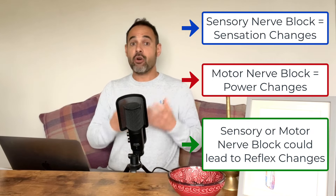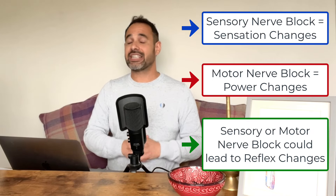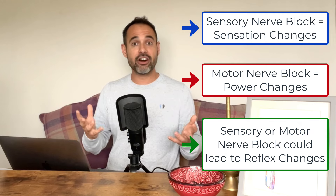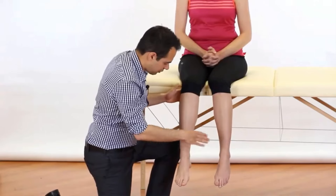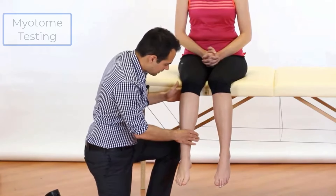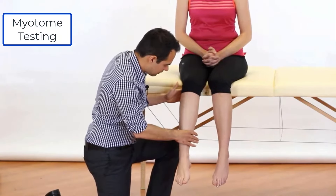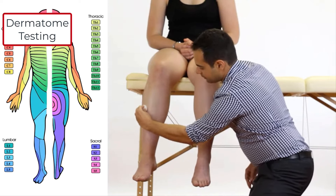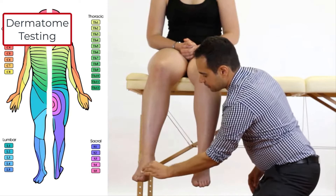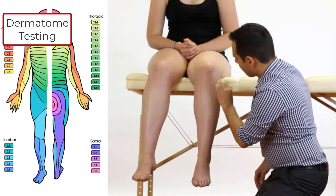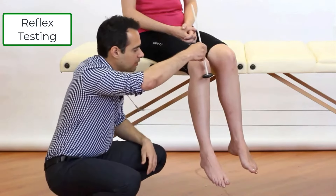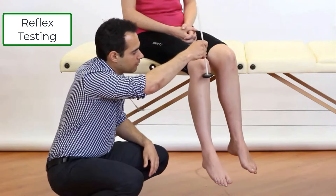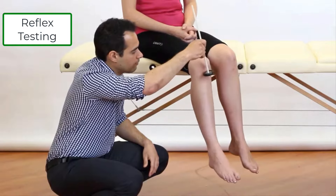As a result, these three key symptoms — dermatomal changes in the form of numbness or pins and needles, myotomal changes in the form of motor weakness, and reflex changes — are a key concept in relation to radiculopathy. Therefore, with these patients, it's critically important that as part of our assessment we include myotomal testing, dermatomal testing, and reflex testing to look at these symptoms and see if they're present.